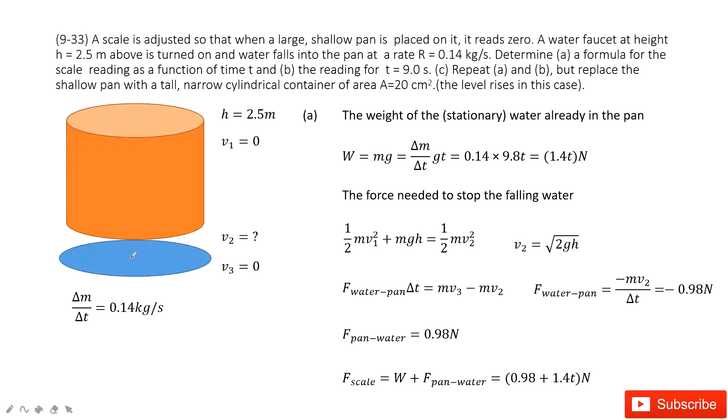First thing we need to consider is the weight of the stationary water already in this pan. Another thing we need to consider is this water just falling down - there must be a force acting on the pan. So this is two parts.